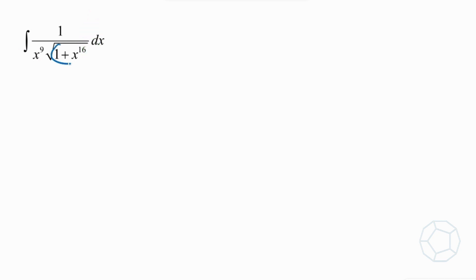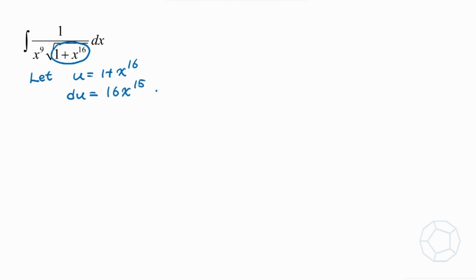The most natural way to start is to substitute the term 1 plus x to the power of 16. Let u equal this expression. Then we obtain du equal to 16x to the power of 15 dx. However, we have the term x to the power of 9, and it is quite hard to get rid of it from x to the power of 15. Therefore, we need another way to do it.